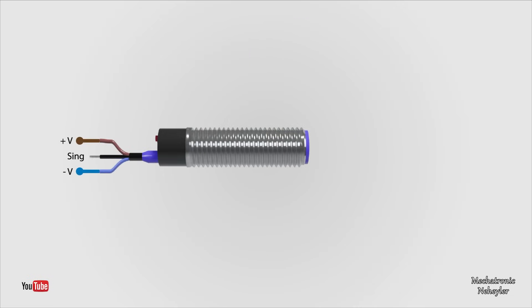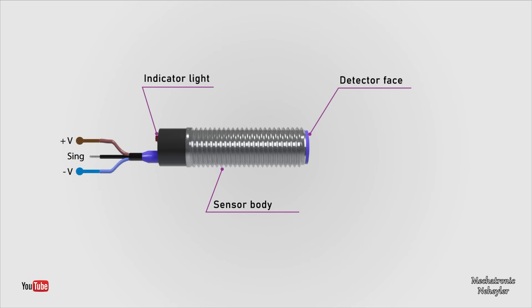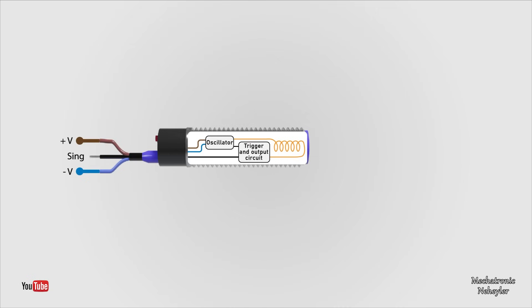The four main external parts of an inductive sensor are the sensor face, the sensor body, the indicator light, and the connecting wires. Inside the sensor body is where the circuitry that makes the sensor work is located. In it, we find a coil, an oscillator, the trigger circuit, and the output circuit.